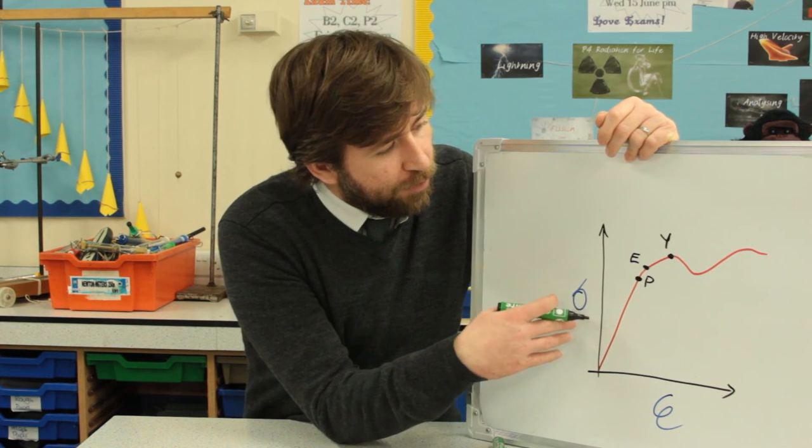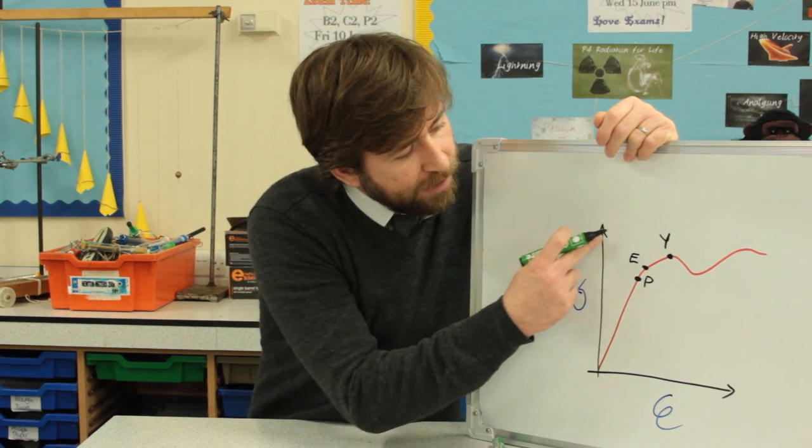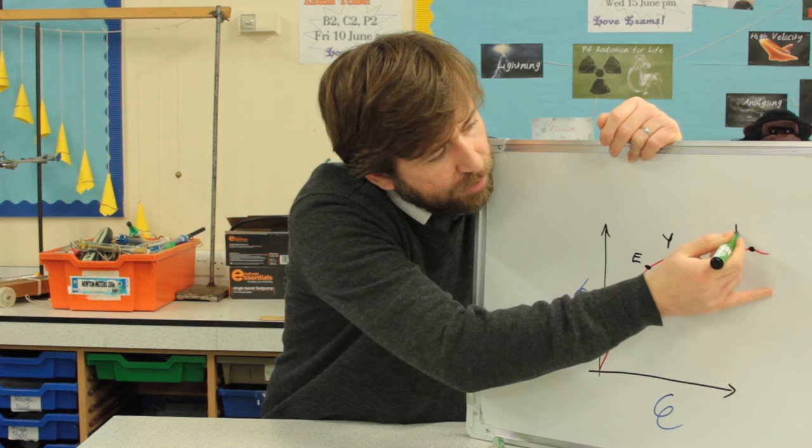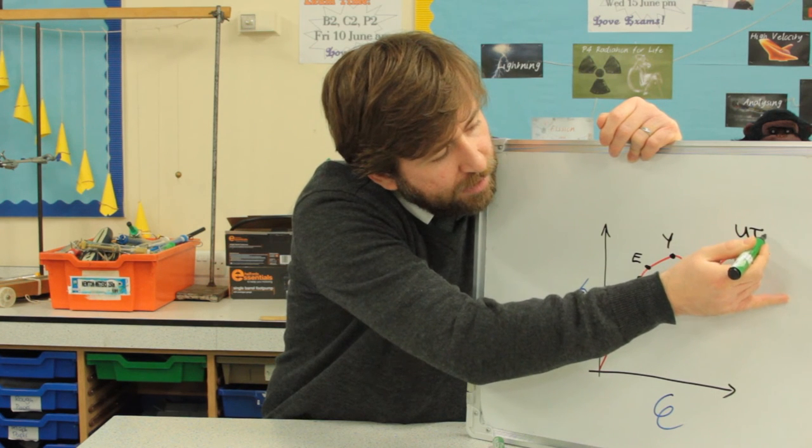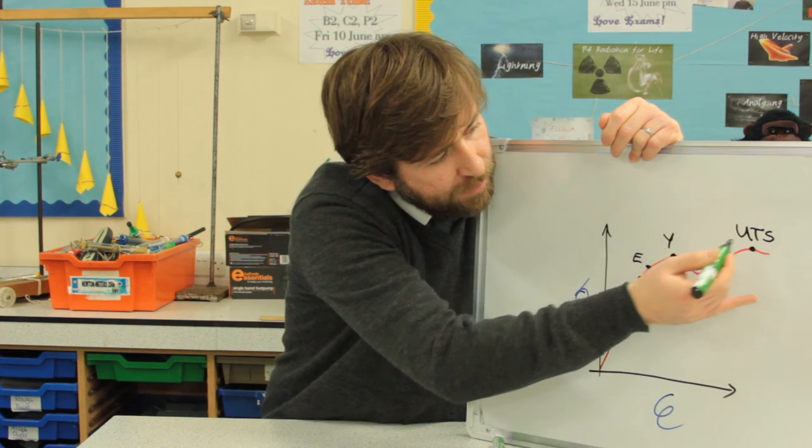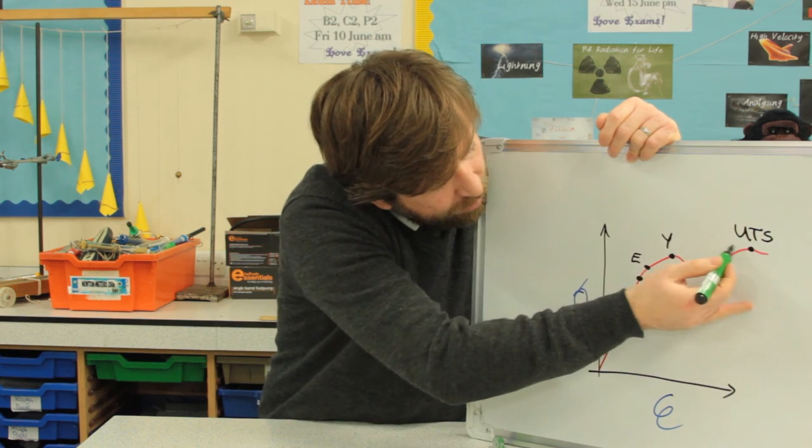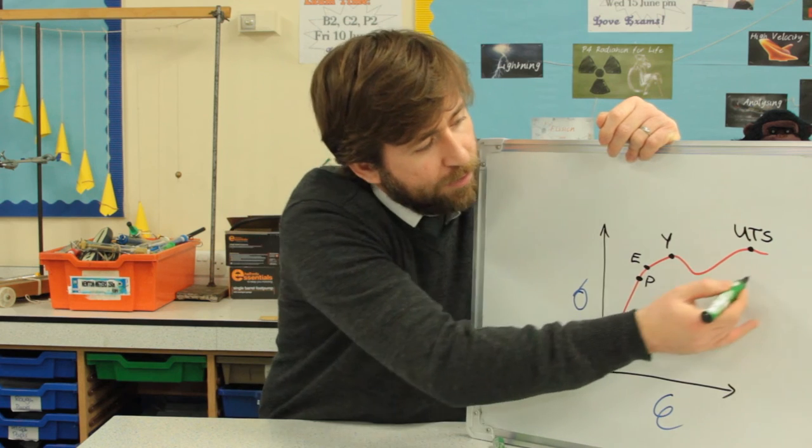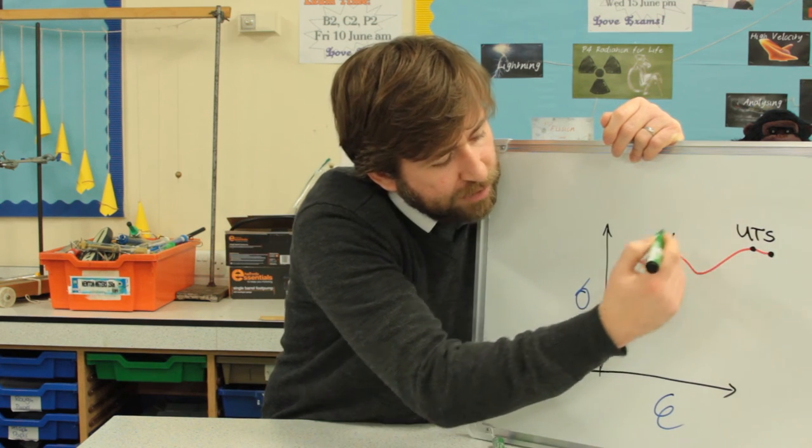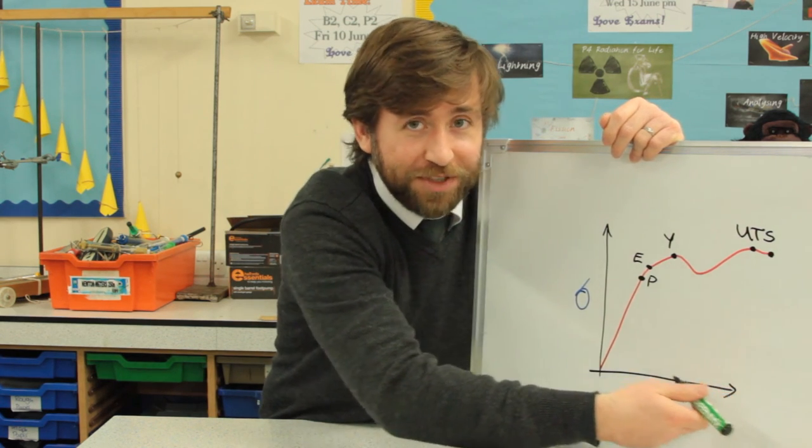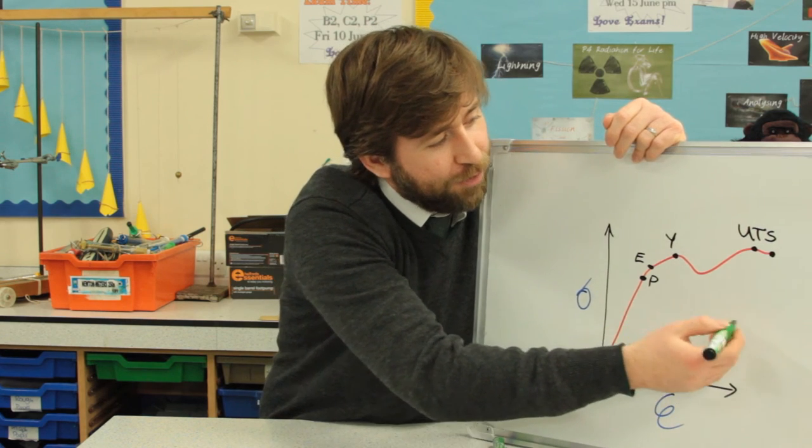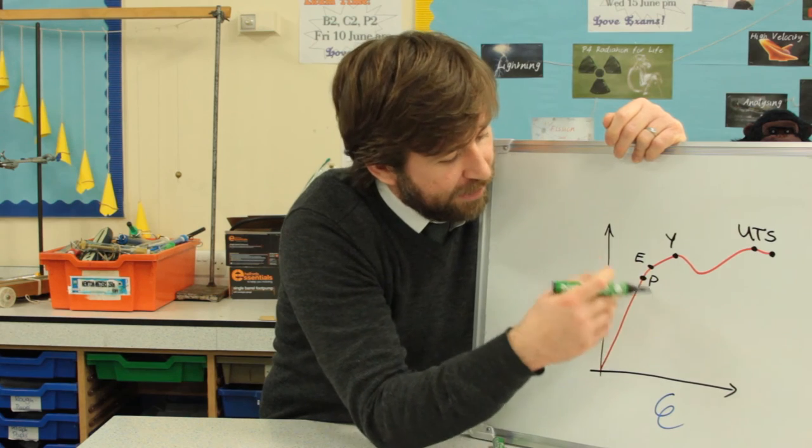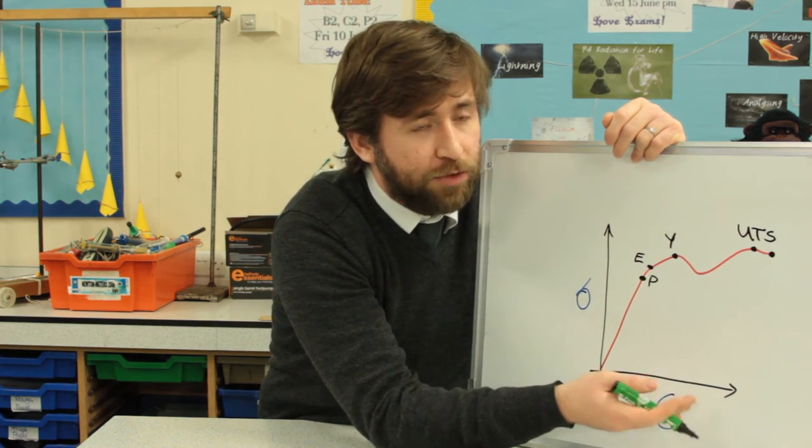Then as we go forward, we just need to know what the highest point on the graph is called. The highest point is called the ultimate tensile stress, because it is the highest possible stress. And then finally, wherever this is, the point at which we're not getting any more extension, because it's broken, is called the breaking point, or the breaking stress, or even the breaking strain.